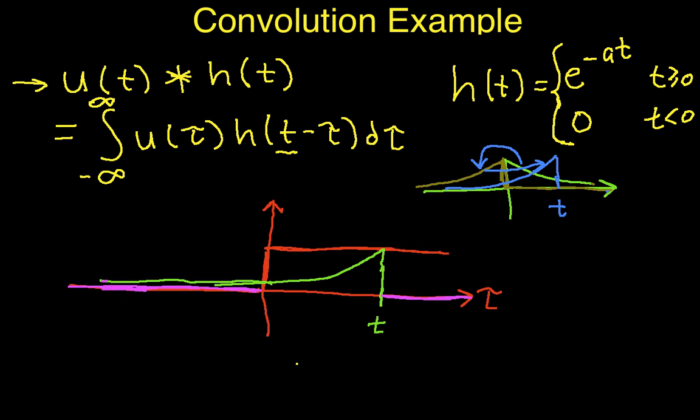And between zero and t, the product of u of tau, which is one, this guy up here is one, and our flipped and shifted e to the minus at is just going to be this thing.